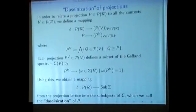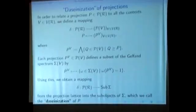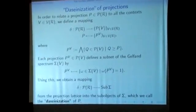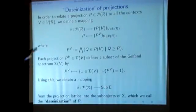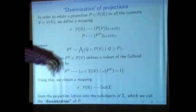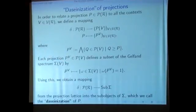When we've done so, then we also have to find the subset of the Gelfand spectrum sigma V for each V. Simply, P^V goes to all the pure states that send P^V to 1. Simply because these are multiplicative states, each projection gets sent either to 0 or to 1, so we pick all those omega that send P^V to 1.